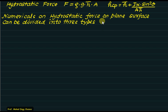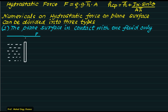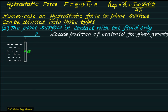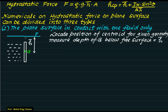We can classify hydrostatic force problems into three categories. In the first category, the plane surface is in contact with one fluid only. We have a plane surface shown as an edge view, with a liquid of density rho. The top surface is at depth h, and the centroid is at distance h-bar from the free surface level. We measure the distance of the centroid from the free surface level to get h-bar.